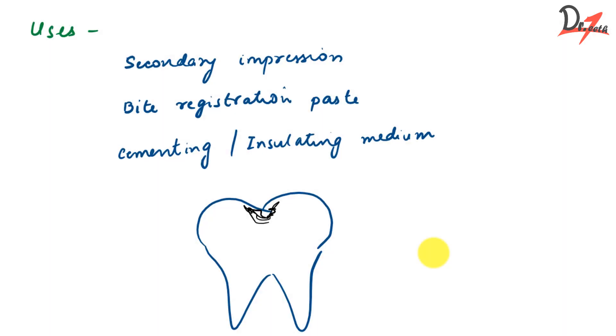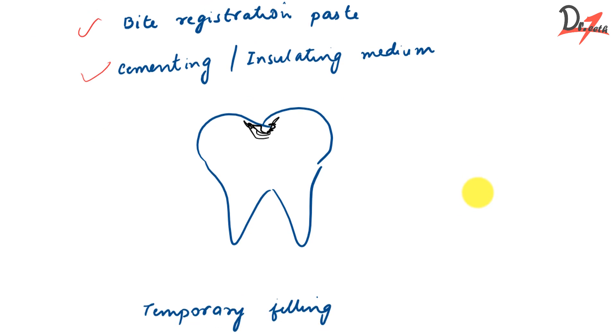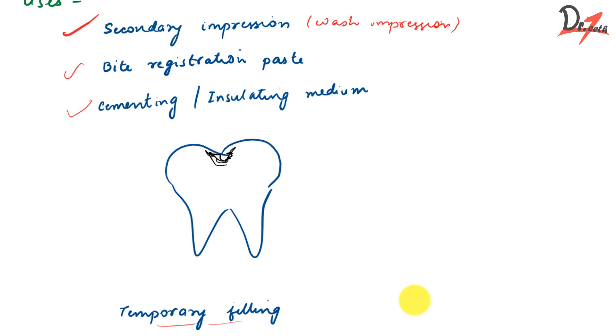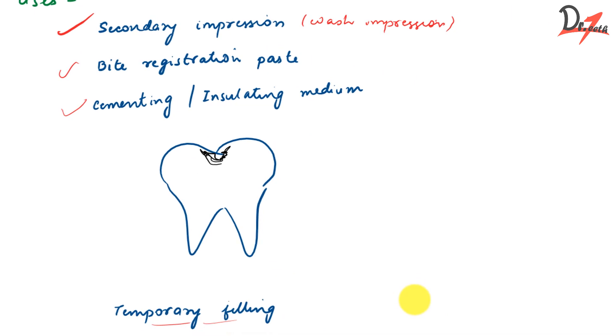Coming to uses of it, we can use it obviously for secondary impression, the wash impression. Let me know why do we call it a wash impression. And then also as a bite registration paste. Though I personally don't like using it as a bite registration paste because it gets really messy. And then also cementing and insulating medium and also as a temporary filling material. This is also used as a periodontal dressing and also for temporary relining material for the denture.